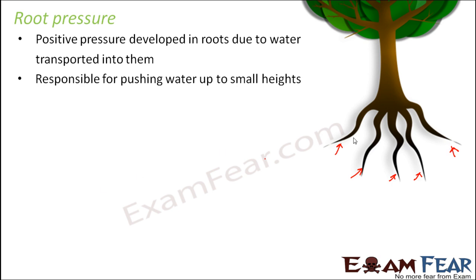When more and more water enters the roots, it exerts pressure and forces water to move upwards. As water moves to each region, more water enters behind it, creating pressure that keeps pushing water further up — this is how root pressure enables upward movement. However, root pressure can only control movement up to smaller heights, not very large heights. That is why we have the concept of transpiration pull, which contributes mostly to the upward movement of water. Root pressure just adds a little to support transpiration pull.